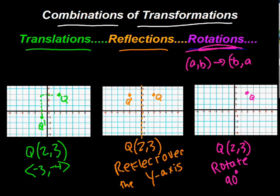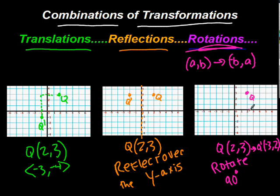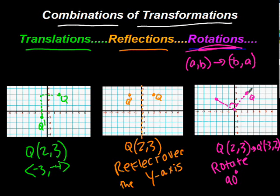So the rule is: (a, b) becomes negative b comma a. I would translate Q to Q prime by saying I have negative 3 comma 2. So let's go over 1, 2, negative 3 and up 2. That looks just about right because we're going about the origin — looks like we have about a 90-degree turn around the origin.